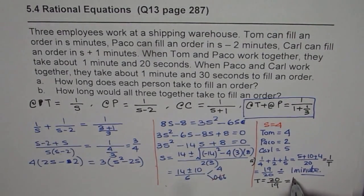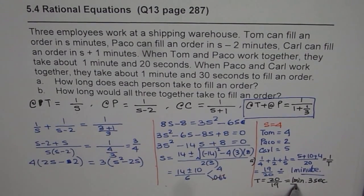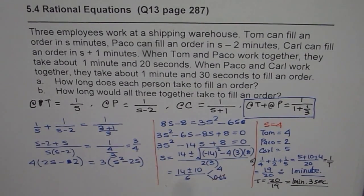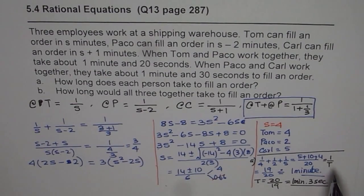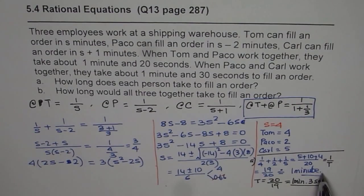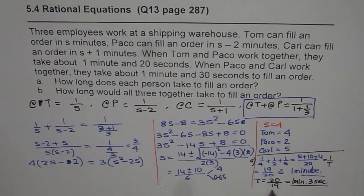So the time taken for all three working together is the reciprocal of 19 over 20, which is 20 over 19, coming to 1 minute and 3 seconds. Thank you.